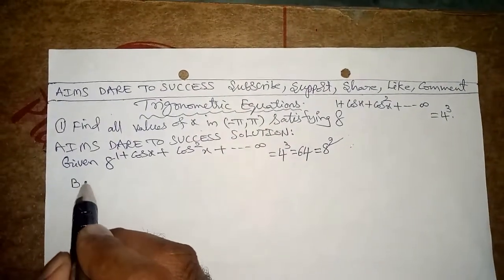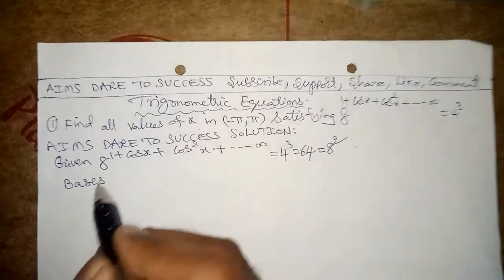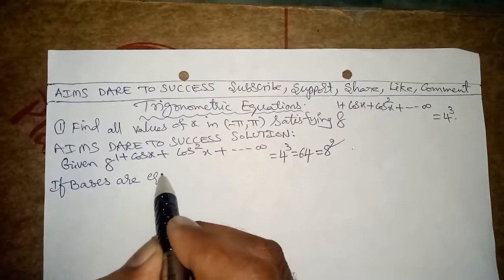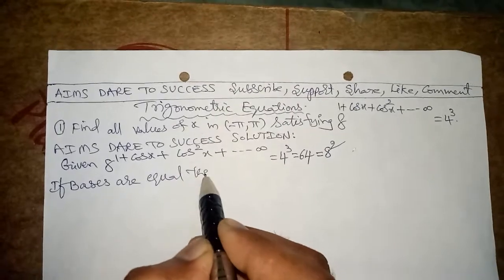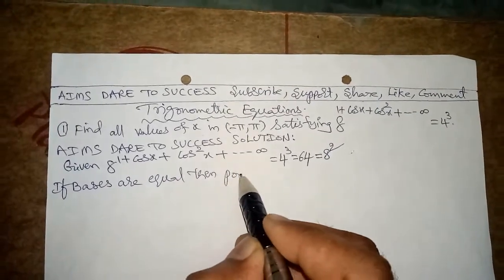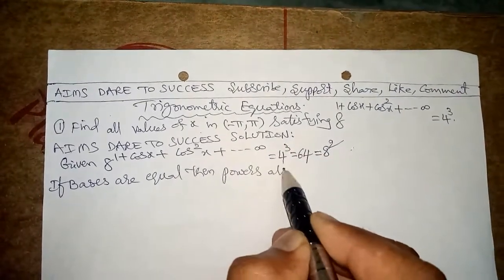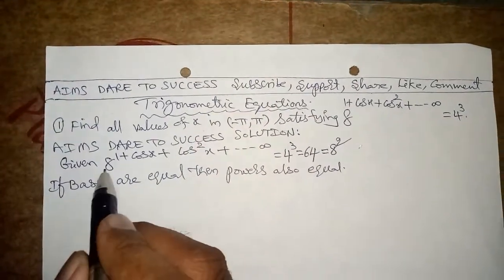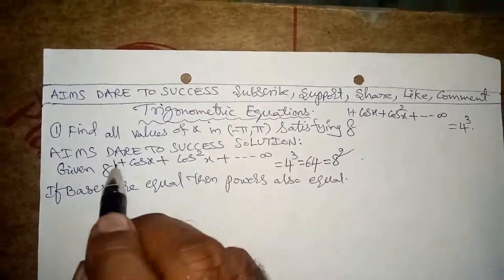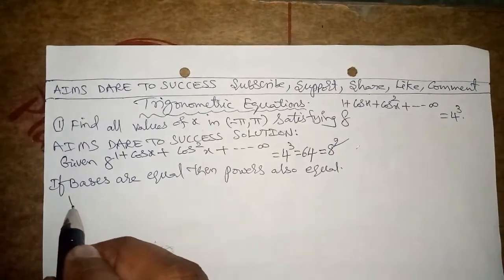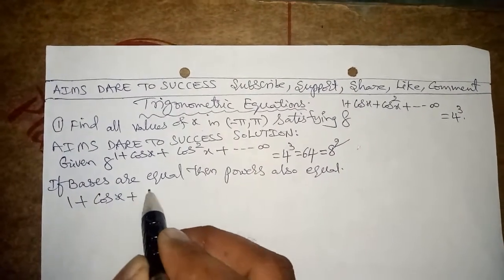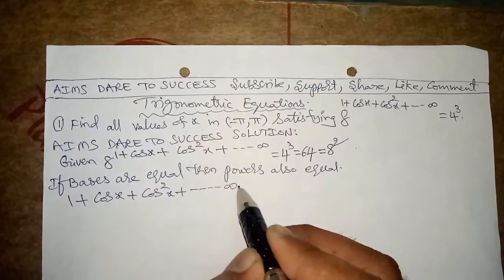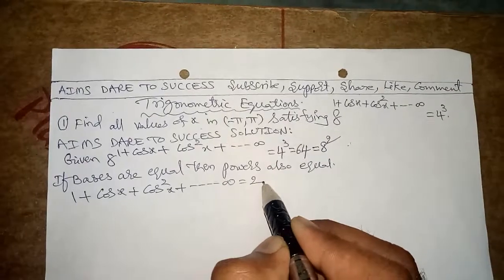Like that we can get 8 equals 8, so powers equal. That is, 1 + cos x + cos²x + ... = 2.